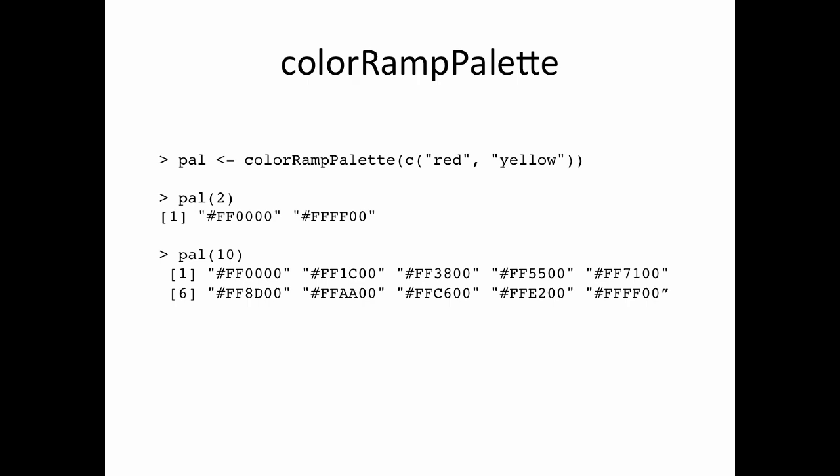Now if I say pal(10), I get 10 interpolated colors. The first element is red — ff on red and 0 on everything else. The last element is yellow — ff on red, ff on green, 0 on blue. In between, there's a gradual mix as green is introduced while red stays high. For all the colors there's no blue, because you don't encounter blue when interpolating between red and yellow. You can see the hex representations changing as you go from red to yellow.